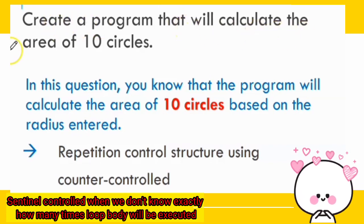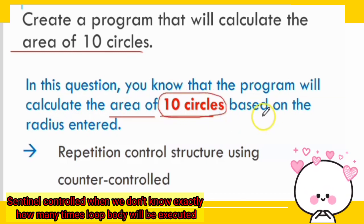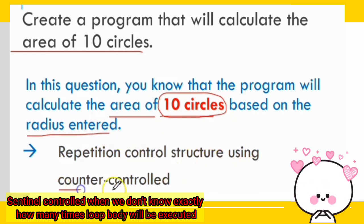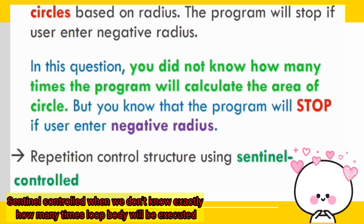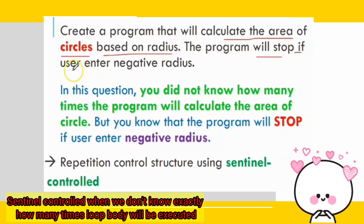For the first question — calculate the area of 10 circles — you know the program will calculate the area of 10 circles based on the radius entered. This uses a counter control repetition structure, because it already states 10 circles, so the repetition will happen exactly 10 times.